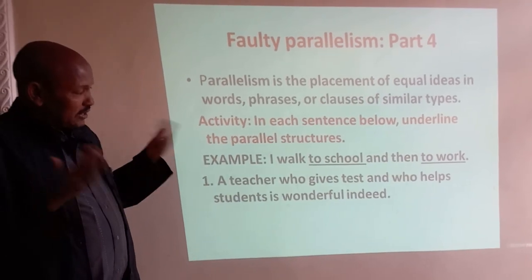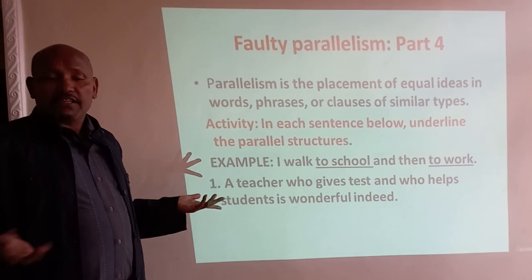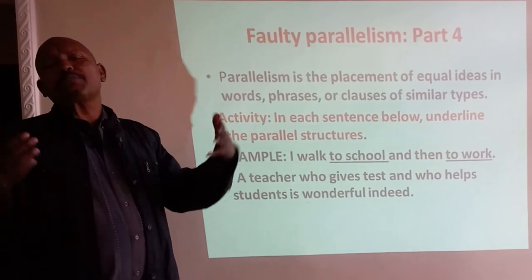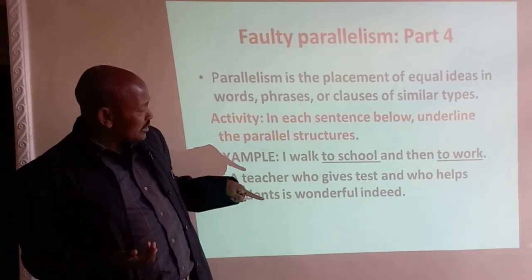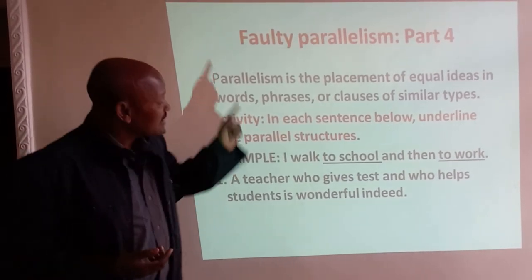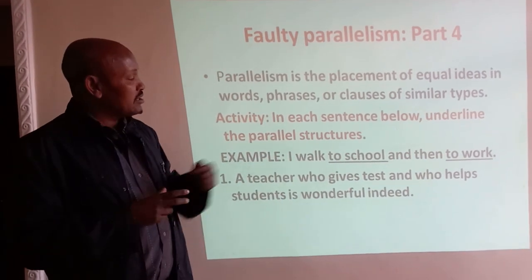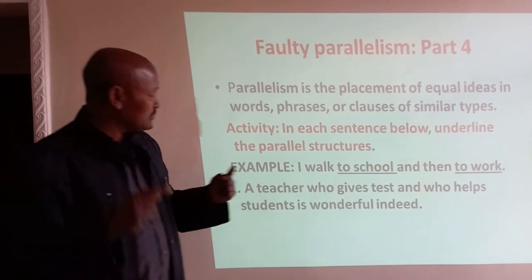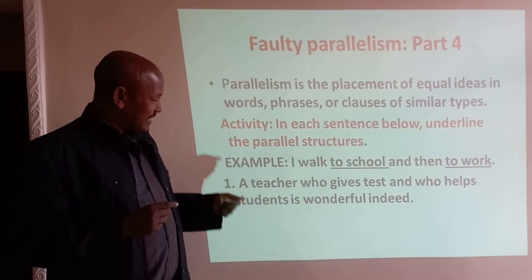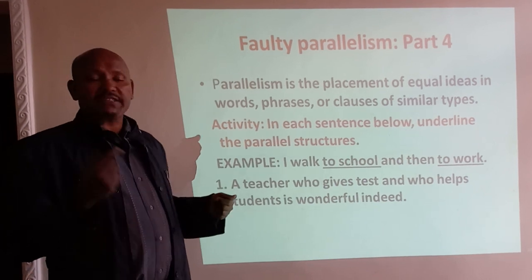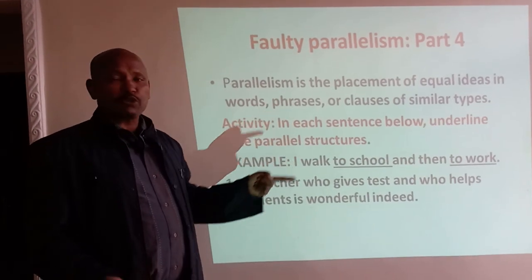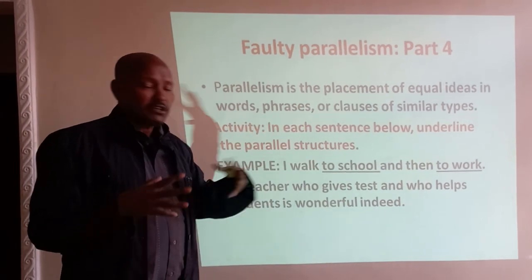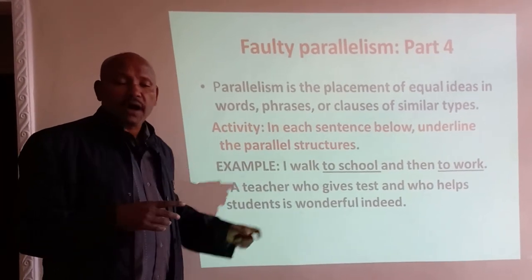What adjective clauses appear before and after the conjunction? That's the first technique. Unless you identify the structure, it's quite difficult to understand where faulty parallelism happens. Here, 'who gives' is simple present, and the second part should also be written in the same form. 'Who gives' and 'who helps' — both are simple present. This shows parallelism. If I wrote 'a teacher who gives a test and helps,' the second would not match the form of the first — that is faulty parallelism. So 'gives' and 'helps' are the underlined words showing parallelism.